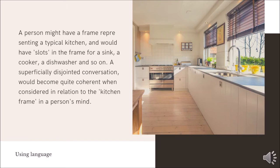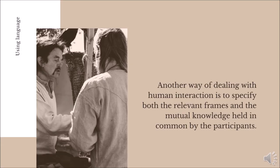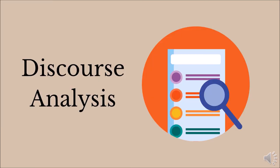For example, a person might have a frame representing a typical kitchen, and would have slots in the frame for a sink, a cooker, a dishwasher, and so on. A superficially disjointed conversation would become quite coherent when considered in relation to the kitchen frame in a person's mind. Furthermore, the speakers in this conversation clearly have a certain amount of mutual knowledge, in that they both have a similar outline kitchen frame. Another way of dealing with human interaction is to specify both the relevant frames and the mutual knowledge held in common by the participants.